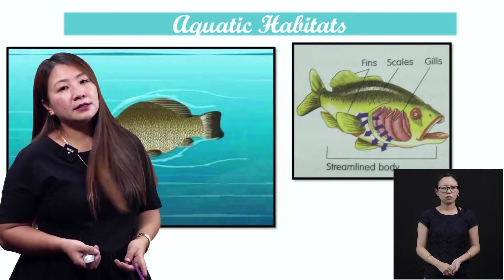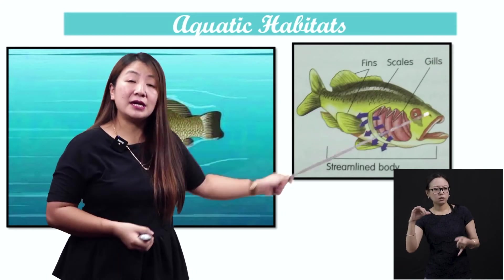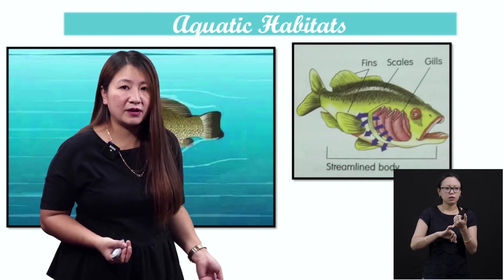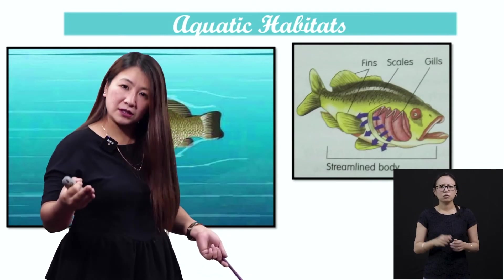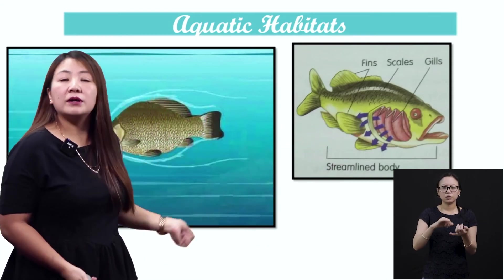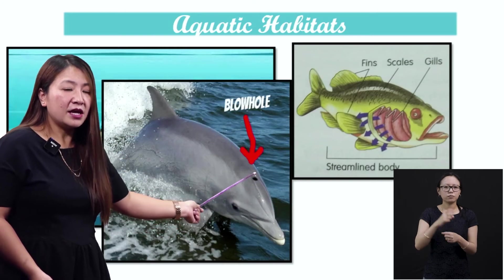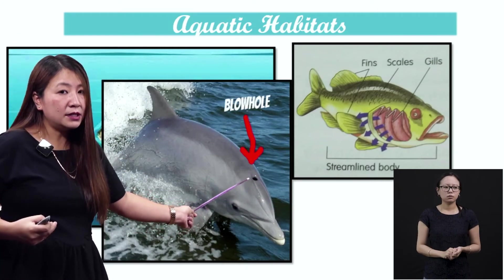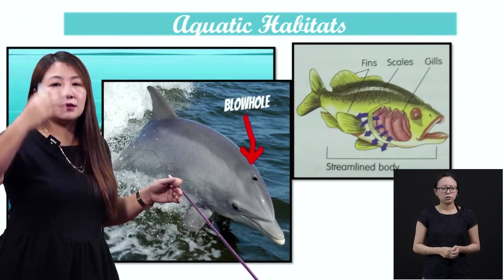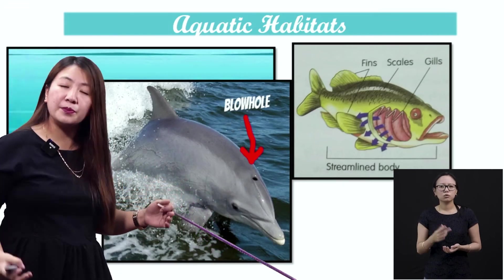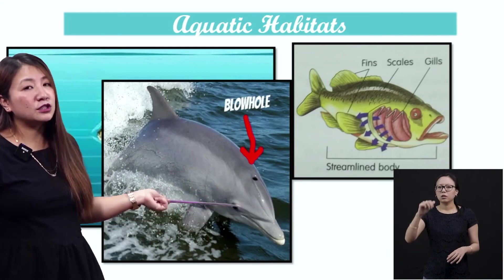Fish also have gills — the red complex structures on the side of the head. They don't have lungs for breathing; instead, they have gills so that they can breathe the oxygen dissolved in water. Now, what about a dolphin? Can you see the hole at the top of the head? This is a blowhole. A blowhole enables them to breathe — when they come to the surface, the blowhole allows them to breathe fresh air. These are adaptations of aquatic animals like fishes and dolphins.